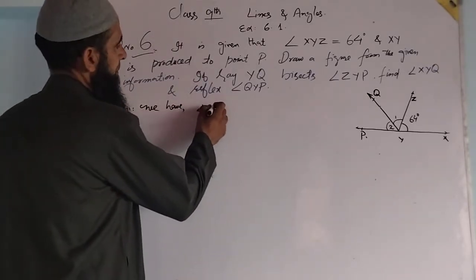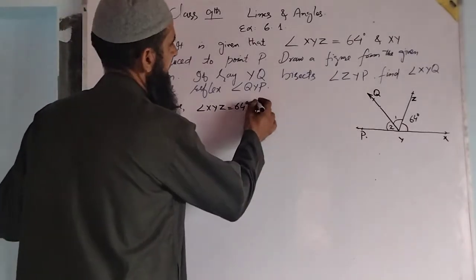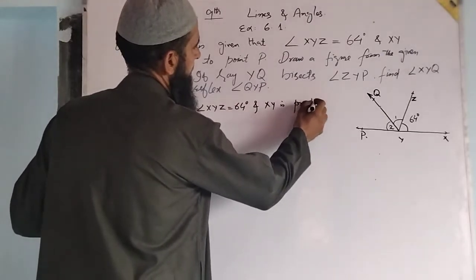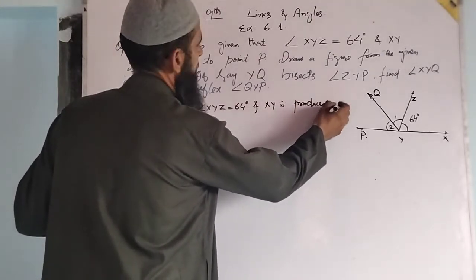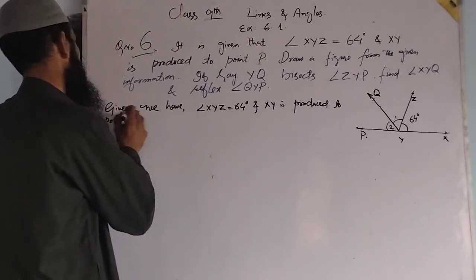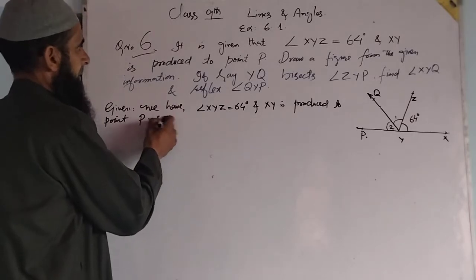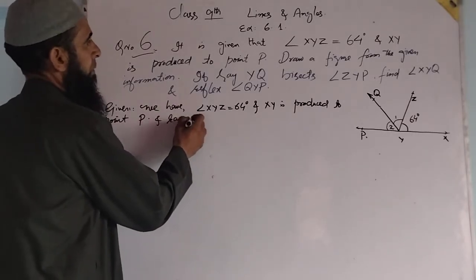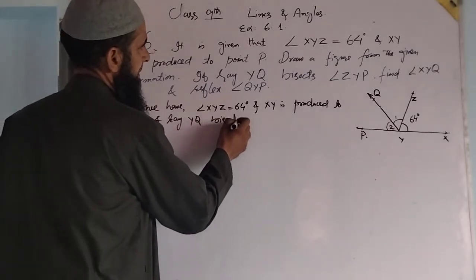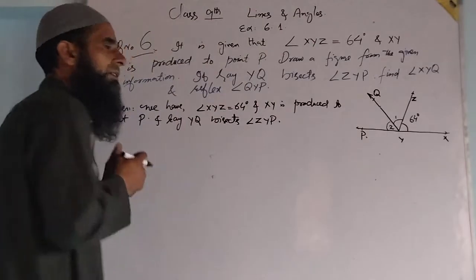Our given conditions are: angle XYZ equals 64 degrees, XY is produced to point P, and ray YQ bisects angle ZYP.